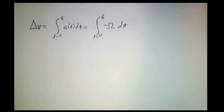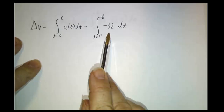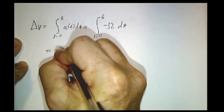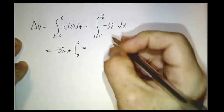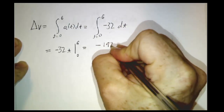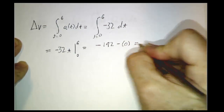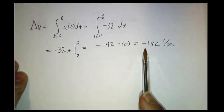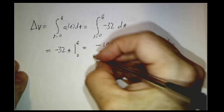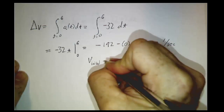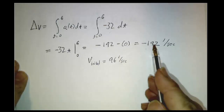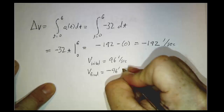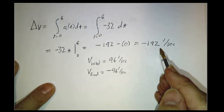To get the change in velocity, we integrate the acceleration, which is negative 32 feet per second squared. We need a function whose derivative is negative 32 — that's negative 32t — evaluated from 0 to 6. This gives negative 192 minus 0, so the change in velocity is negative 192 feet per second. The initial velocity was 96 feet per second, so the final velocity is 192 feet per second less than that, meaning the final velocity is negative 96 feet per second. Going from 96 to negative 96, the change is indeed negative 192.